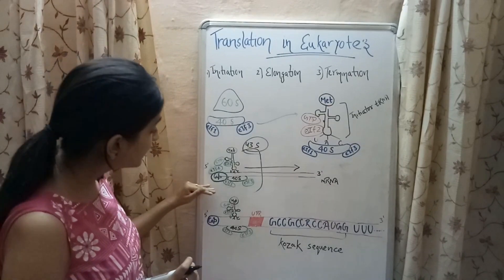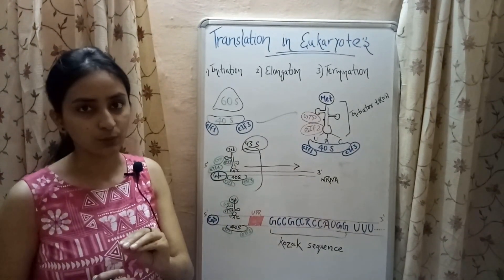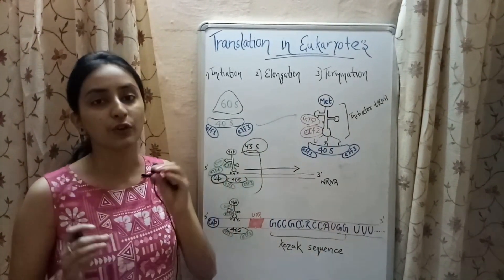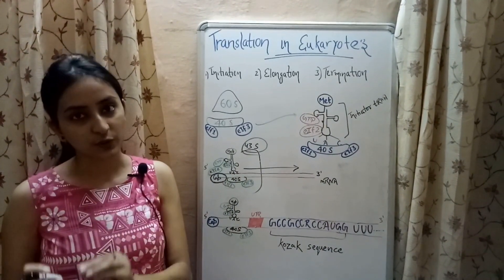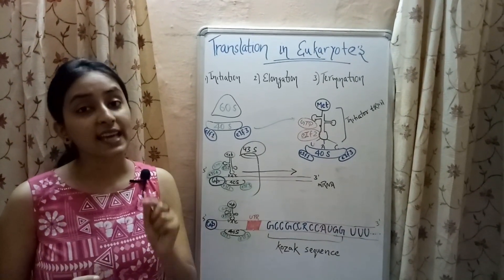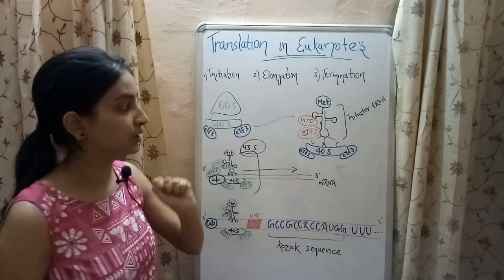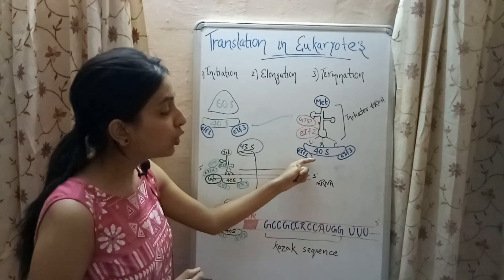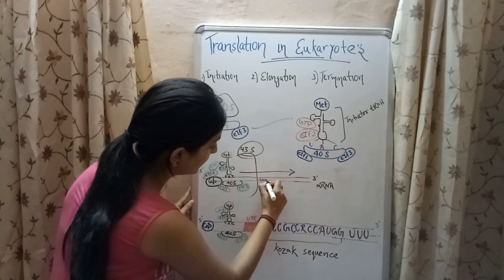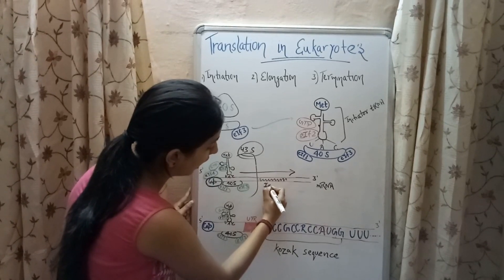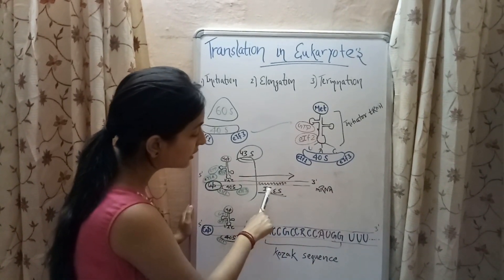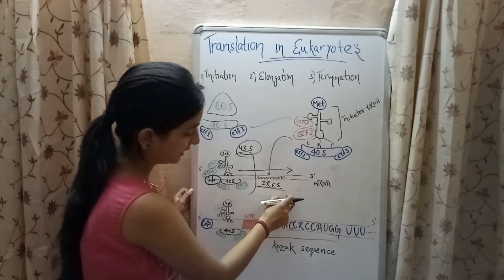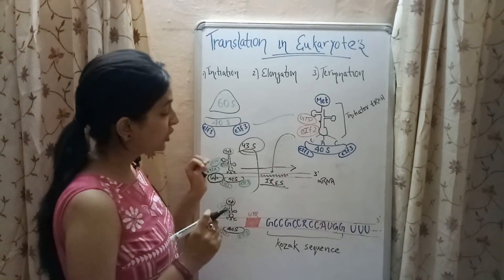There is one more method of initiation: cap-independent initiation of translation. In this method, the entire structure containing the initiator tRNA along with the 40S subunit of the ribosome attaches to a region in the mRNA known as IRES, which stands for Internal Ribosome Entry Site, and then initiates the translation process.